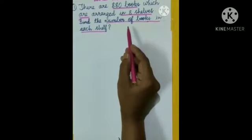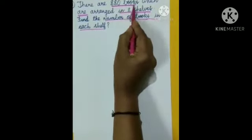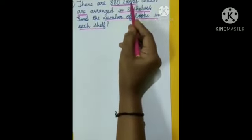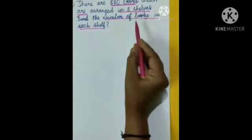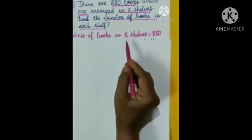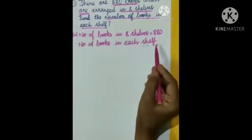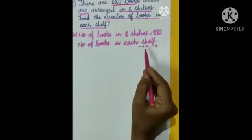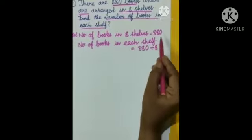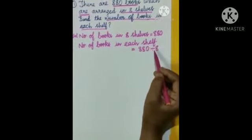Many they have given, one we are finding — many to one, we should do a division operation. Now we will frame statements. First statement: Number of books in 8 shelves is equal to 880. Second statement: Number of books in each shelf is equal to 880 divided by 8.